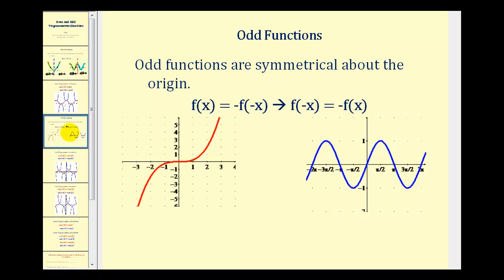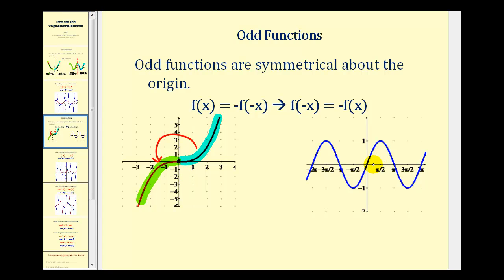Now let's talk about odd functions. Odd functions are symmetrical about the origin, which means they have rotational symmetry about the origin. If we rotate this 180 degrees about the origin, the function would look exactly the same — this blue half and this green half would just switch places. And the same is true for the graph of y equals sine theta. If we rotate this about the origin 180 degrees, this blue half and this green half would just switch places.